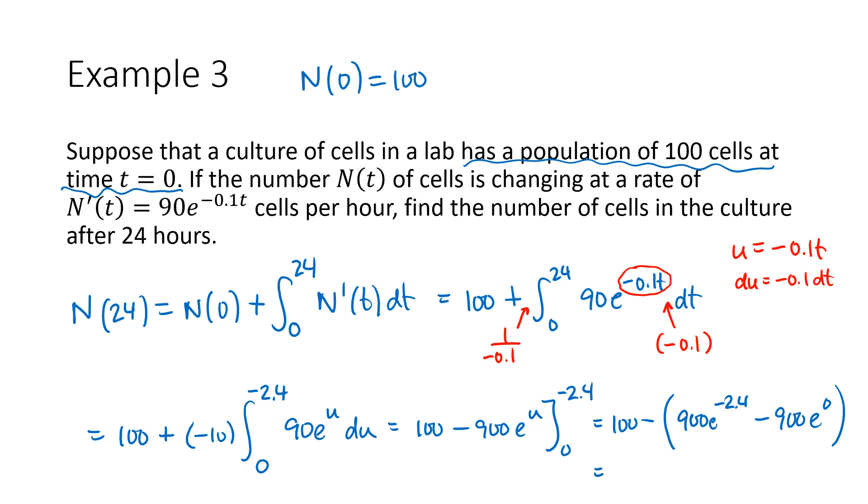And when we plug all of that into our calculator, we get 918.35. We can't have a decimal of a cell. We can't have half of the cell. So the only kind of answer that would make sense here would be a whole number. So we'll go ahead and round to the nearest whole number and say 918 cells.